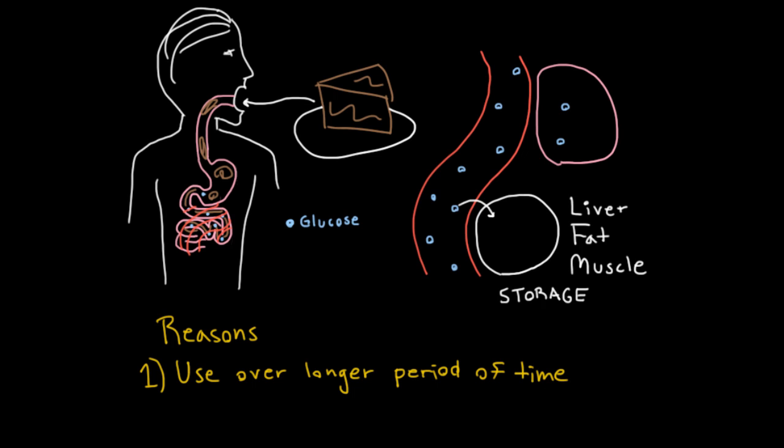Now, there's actually a second reason why you want to get the glucose out of your blood. And that is that glucose is toxic. So in high quantities, and let me tell you, cake will give you a lot of glucose. In high quantities, glucose is actually going to damage your body.